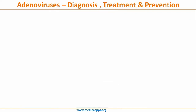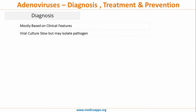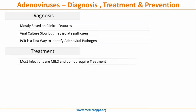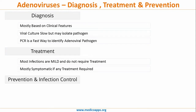For diagnosis, it is mostly clinical. Viral culture may be used — it is very slow but may isolate the pathogen. PCR is a fast way to identify the adenoviral pathogen. Treatment: most infections are mild and do not require treatment. If treatment is given, it is mostly symptomatic and does not require any antiviral treatment.